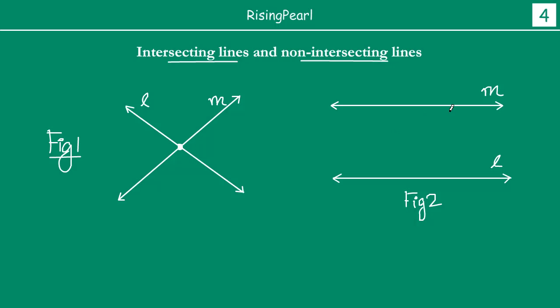In figure 2, this line L and line M, it looks like they will never intersect — they will not meet. So this pair of lines, line L and M in figure 1, we call them intersecting lines, and line L and M in figure 2, we call them parallel lines.